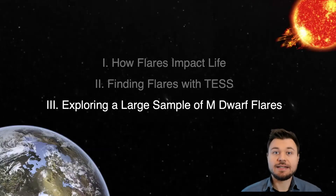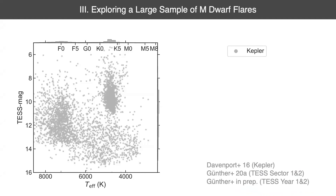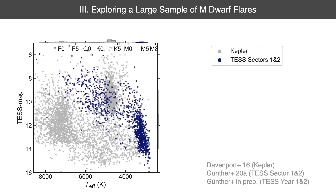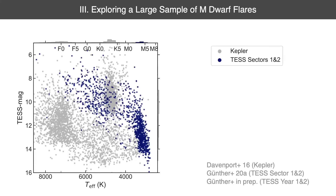The most amazing thing TESS enables in these studies is that we can explore an unprecedentedly large sample of M-dwarf stars. To illustrate this point, here is a diagram of effective temperature in Kelvin on the x-axis and TESS magnitude on the y-axis. In gray is the Kepler flaring star catalog published by Jim Davenport in 2016. Because Kepler was mainly focused on F, G, and K stars, that's reflected in the diagram. In our first study from TESS sectors one and two, we could already massively expand the number in the M-dwarf regime — flipping between the two diagrams shows a lot of new blue points, especially in the M-dwarf and bright FGK star regimes.